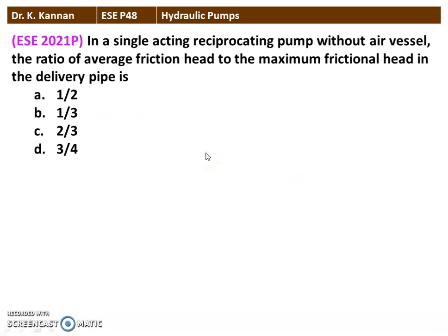Next question from the 2021 question paper: In a single acting reciprocating pump without air vessel, the ratio of average friction head to the maximum friction head in the delivery pipe is — options are 1/2, 1/3, 2/3, and 3/4. The correct answer is 2/3. In the case of a reciprocating pump without air vessel, the average friction head is 2/3 times the maximum friction head in the delivery pipe.